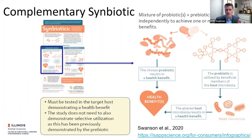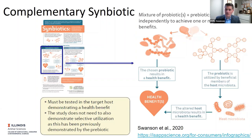Looking at the infographic: a complementary symbiotic is probably what most people think about. You have a mixture of an already established probiotic and an already established prebiotic, and they can function independently to provide a health benefit — the same or different health benefits. In each case, the combination must still be tested in the target host demonstrating the health benefit. However, the selective utilization does not need to be demonstrated in that study because it's already been demonstrated through its definition as a prebiotic.